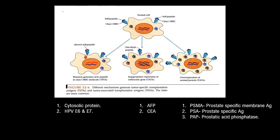Here is a diagrammatic representation of different mechanisms which generate tumor specific antigens and tumor associated antigens. For tumor specific antigens, examples include cytosolic proteins and human papillomavirus E6 and E7. For tumor associated antigens, examples are AFP and CEA as oncofetal proteins, and over-expressed normal proteins such as prostate specific membrane antigen, prostate specific antigen, and prostatic acid phosphatase.